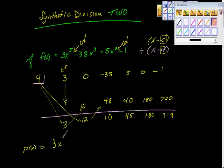x to the 4th, not to the 5th. This is a positive 12, so plus 12x to the 3rd power, plus 10x squared, plus 45x, plus 180.